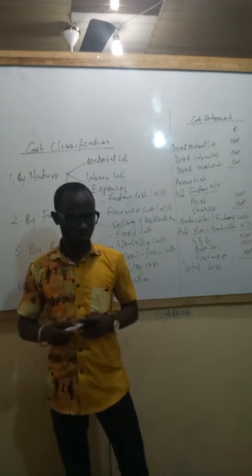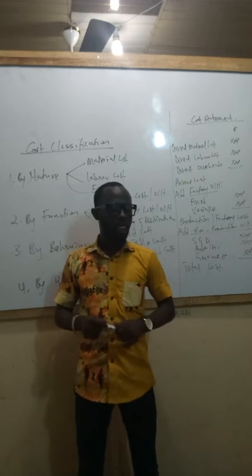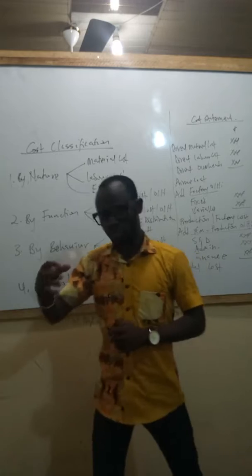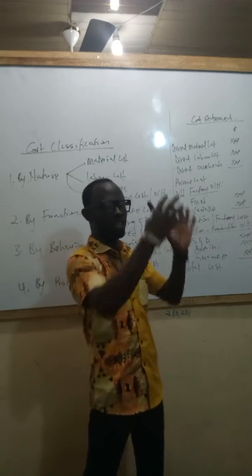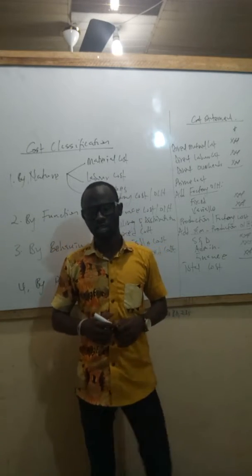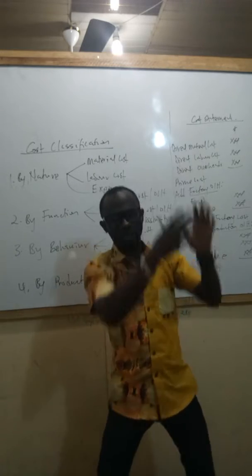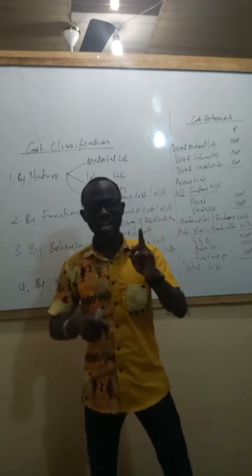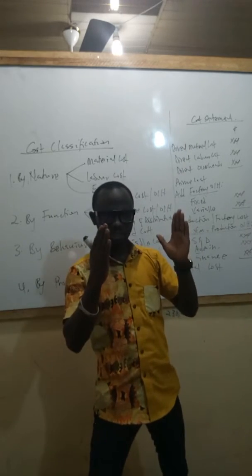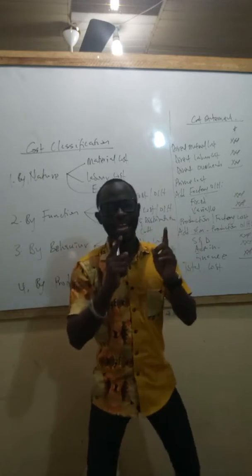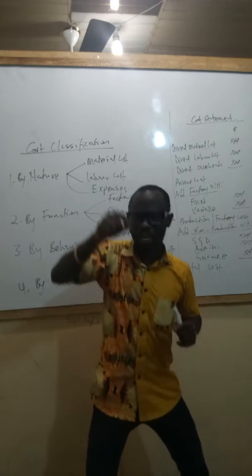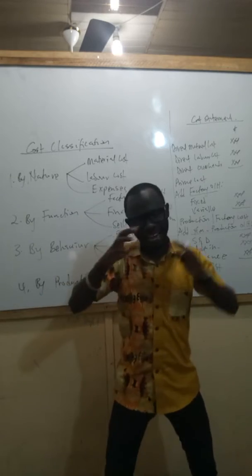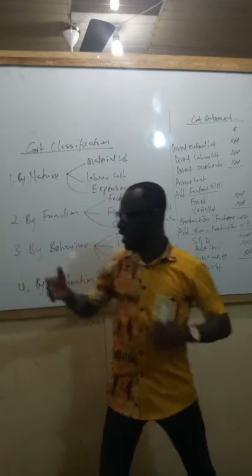The fourth type is step costs. A step cost is a cost which is fixed in nature but only within certain levels of activity. For instance, if a company produces from 0 to 10,000 units and incurs an electricity expense of $120,000, meaning as long as you are producing from 0 to 10,000 units you will be incurring $120,000 — but any units produced after 10,000 will incur an additional electricity cost of $5 per unit. That additional cost becomes the step cost.